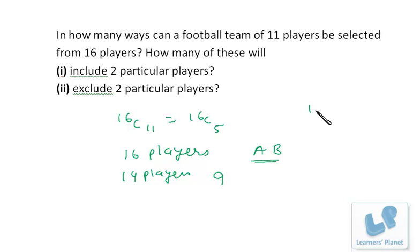And the next is exclude two particular players. So suppose we have to exclude these two particular players, that is A and B - we don't have to choose them. Now we are having 16 players, out of this 16 two we don't have to choose, so we are left with 14 players. Now we have to make the team of 11 players from these 14 players.